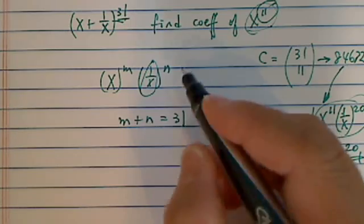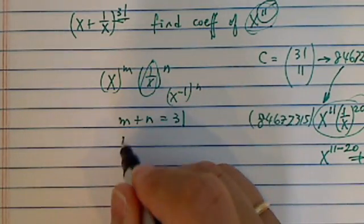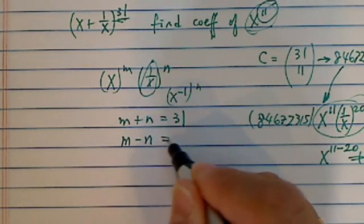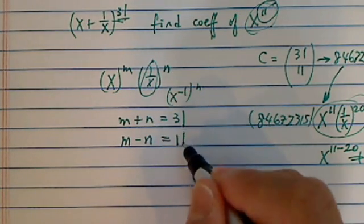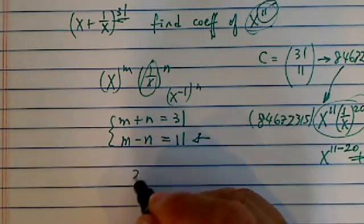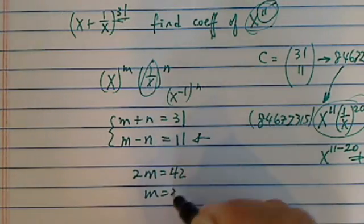Also, because this one is really x to the minus 1 times n, you have x's power m minus n is equal to 11. This is the one they're asking for. So you actually have to solve what m is. So 2m is equal to 42, m is equal to 21.